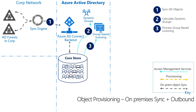In step three, a batch job processes group-based licensing for Microsoft cloud services. Following the previous example, the best HR team ever group will be assigned licenses specifically for the needs of that group — let's say Exchange Online, OneDrive for Business, and Dynamics 365.